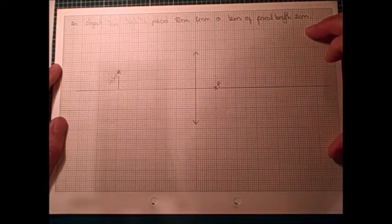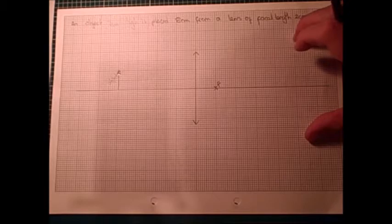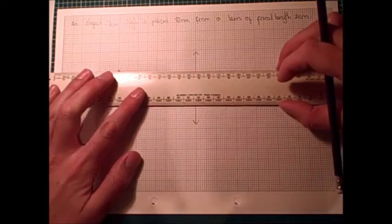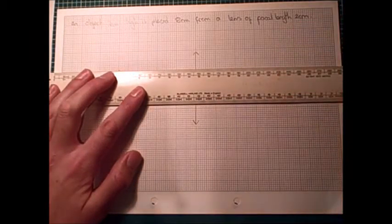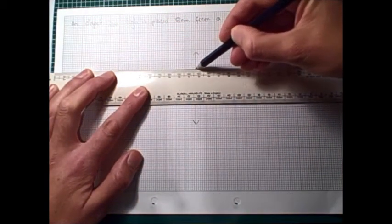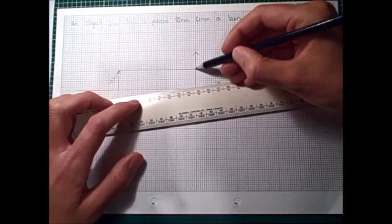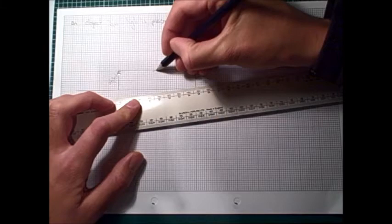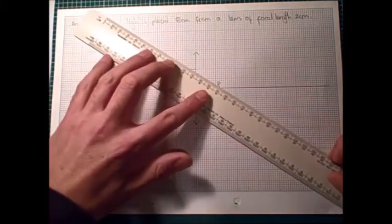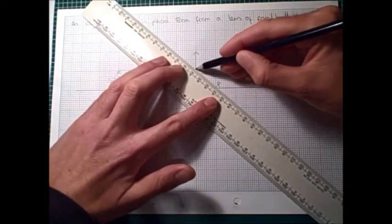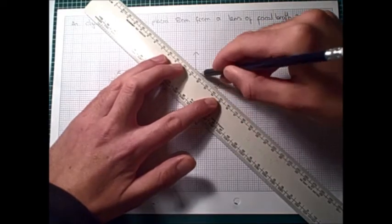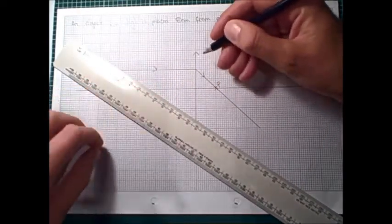Okay, so to make our ray diagram, we need to consider what happens to two special rays. And the first one we'll consider is one which goes parallel to the principal axis towards the lens from the top of the object. So we'll draw a line parallel to the principal axis. And then we should put an arrow on that because it's a real ray. And then when it reaches the lens, it refracts and will pass through the focus. So then we need to draw a line from where it hits the centre of the lens to where it goes through the focus. And we put another arrow on that.